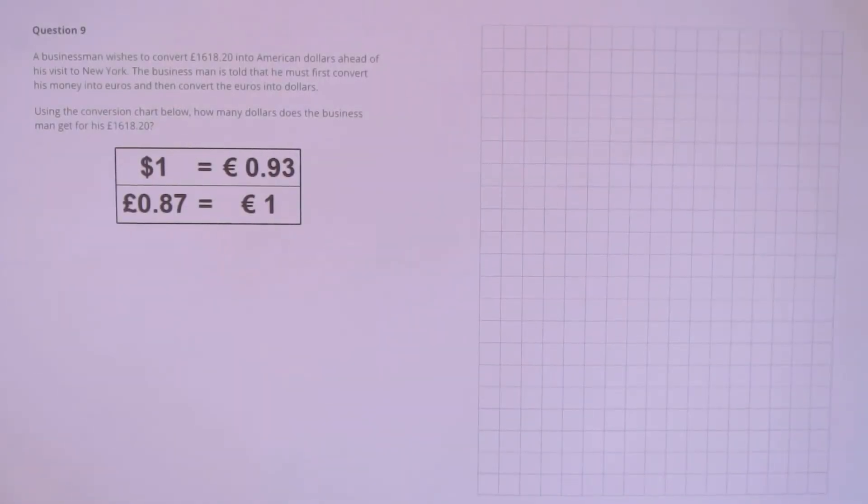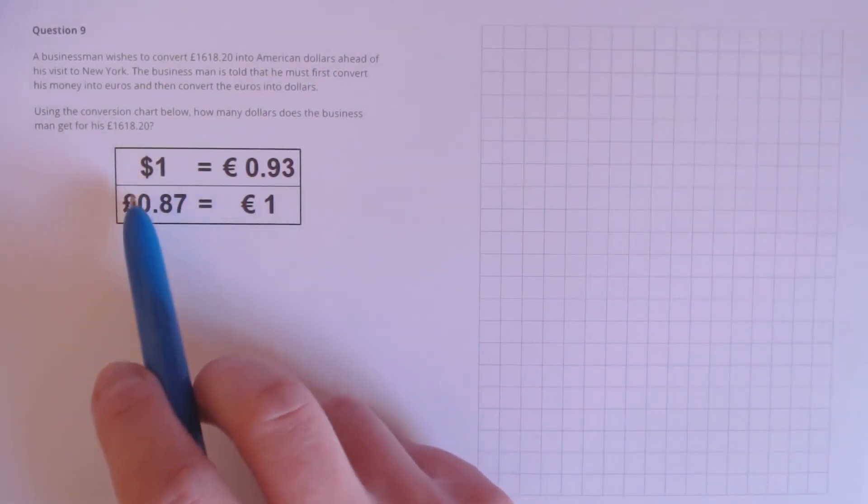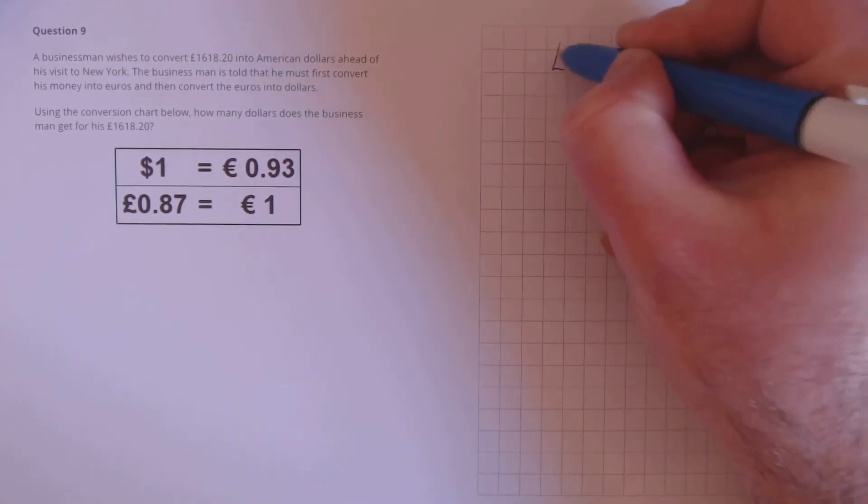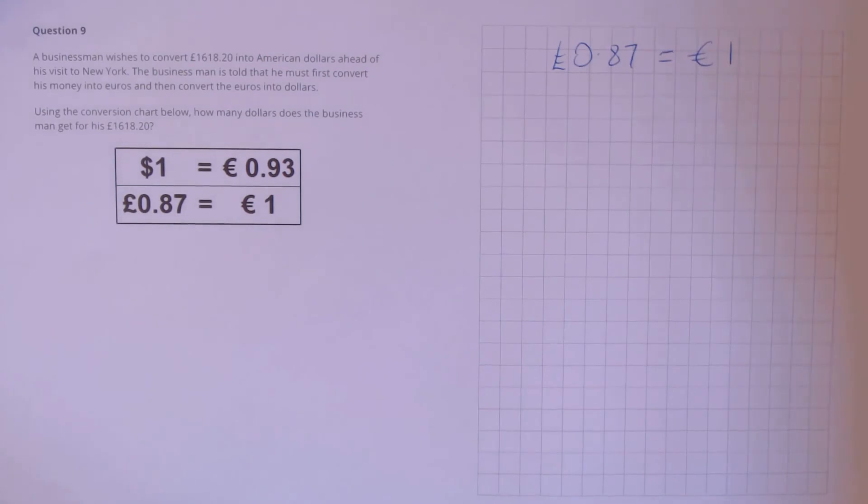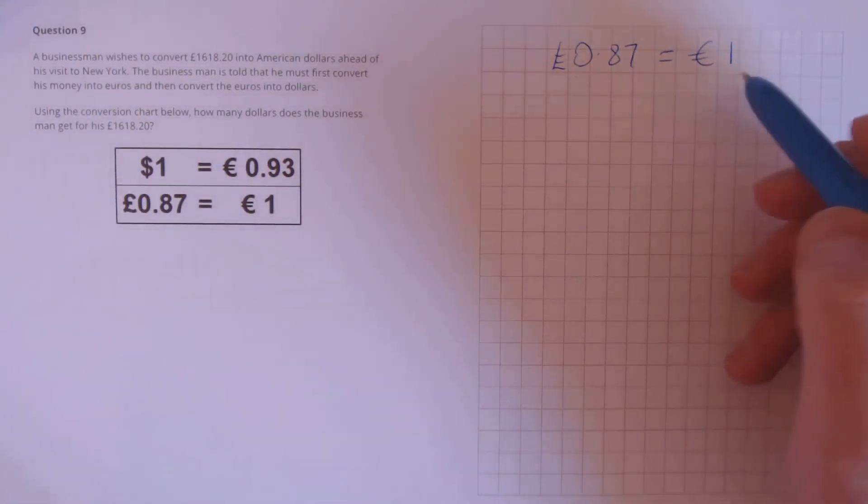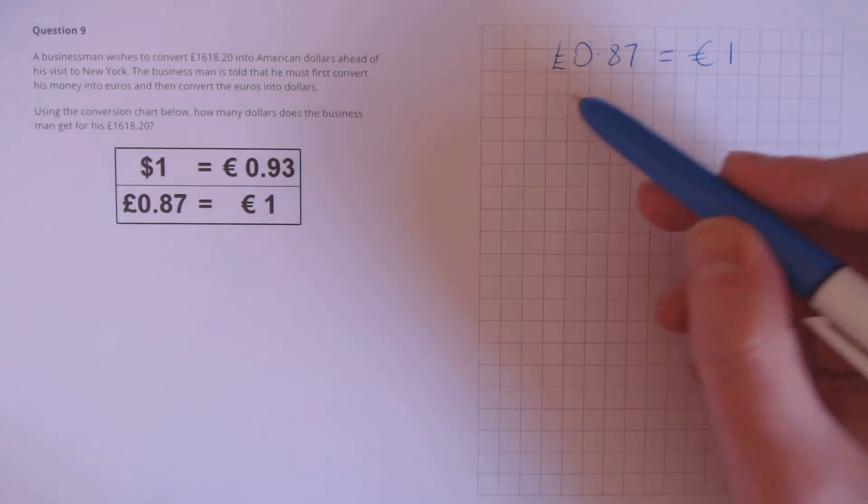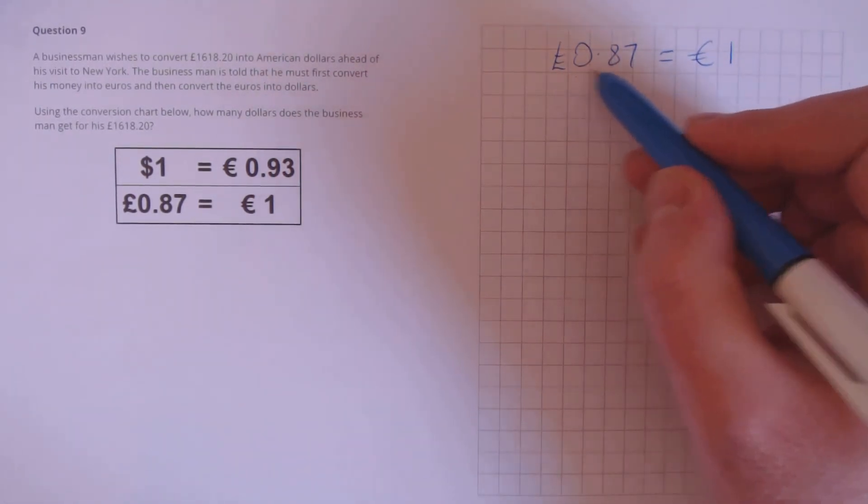Question 9. A businessman wishes to convert £1,618.20 into American dollars ahead of his visit to New York. The businessman is told that he must first convert his money into Euros and then convert the Euros into dollars. Using the conversion chart below, how many dollars does the businessman get for his £1,618.20? First, we need to make a conversion from pounds into Euros. We're given that the ratio is 87 pence equals 1 euro. To get this into pounds to Euros, we need to divide by 0.87. On the left-hand side, we're going to have 1 pound. On this-hand side, we'll have 1 over 0.87.